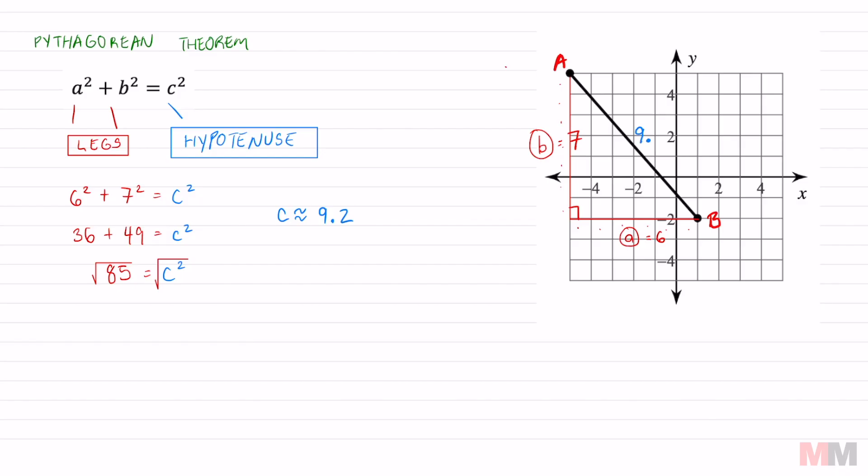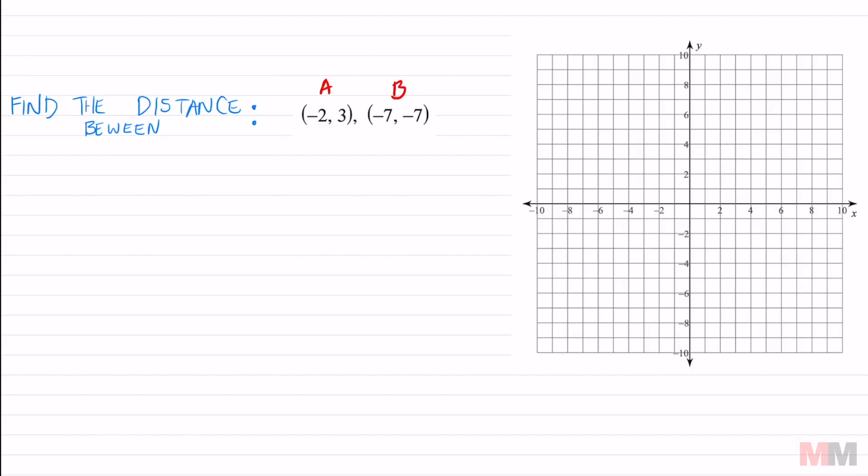If you did this correctly, you will approximately get 9.2. We're just gonna round to the nearest tenths for c. And that is my diagonal distance. A through B is about 9.2 or the square root of 85. Alright, let's try another one out.